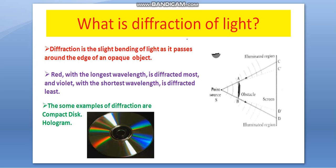Now see that topic, that is diffraction. What is diffraction of light? Diffraction is the slight bending of light as it passes around the edge of an opaque object. So now see how MCQ can be found over this topic.